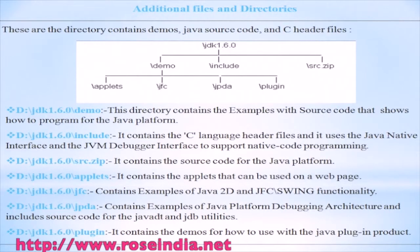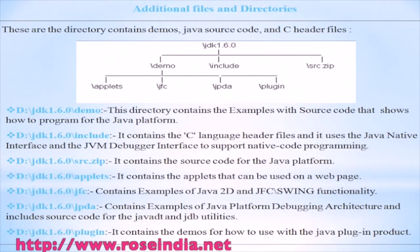JDK 1.6.0\src.zip contains the source code for the Java platform. JDK 1.6.0\applets contains applets that can be used on a web browser. JDK 1.6.0\jfc contains examples of Java 2D and JFC Swing functionality. JDK 1.6.0\jpda contains examples of Java Platform Debugging Architecture and includes source code for the Java DT and JDB utilities. JDK 1.6.0\plugin contains demos for how to use the Java plugin product.